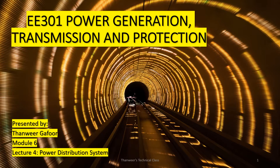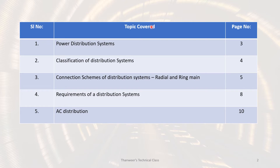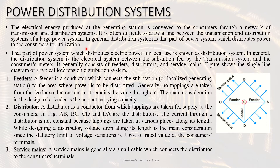Welcome back. EE3 is the last module for the lecture series on power distribution systems. Topics covered include AC and DC distributions, distribution system connection schemes, radial, ring main, and interconnected systems, requirements of distribution system, and AC distribution. Electrical energy from generating stations is transmitted to consumers through transmission lines and then distribution lines.